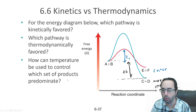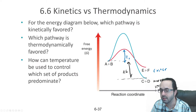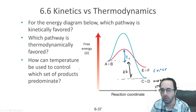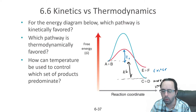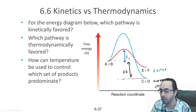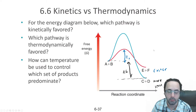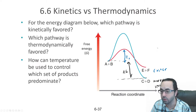Temperature can be used to control which set of products predominates. If we raise the temperature, we increase the number of molecules that have the activation energy to produce C and D, so at higher temperatures we'll get more C and D. However, at lower temperatures, very few molecules have the kinetic energy to reach the higher transition state, so we might get a lot more E and F. In organic chemistry, knowing the exact numbers is less important; what matters is having a general sense of sign and magnitude of activation energies and delta G.